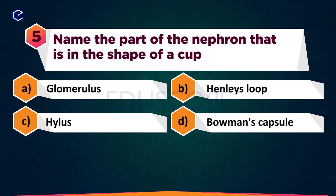Name the part of the nephron that is in the shape of a cup. Options: Glomerulus, Henle's Loop, Bowman's Capsule.